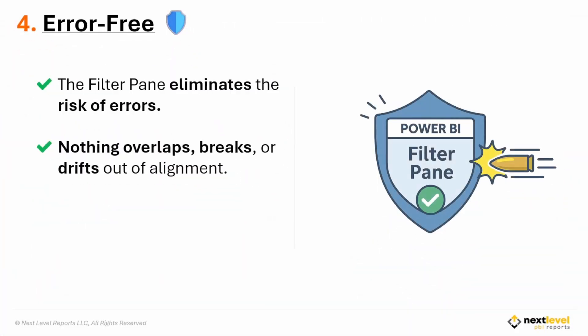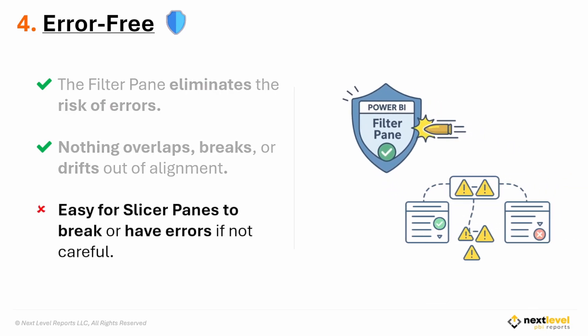Reason number four: the filter pane is error proof. When you choose to utilize it, you're eliminating the risk of errors because it always behaves as intended. It uses one consistent filtering system, so nothing breaks, nothing gets out of sync, and nothing needs to be fixed. Building a clean custom slicer pane requires a lot of skill, and I see issues all the time in other reports such as overlapping layers, duplicate slicers, broken bookmarks, and sync issues. So if you want the most reliable error-proof filtering experience, go with the filter pane.